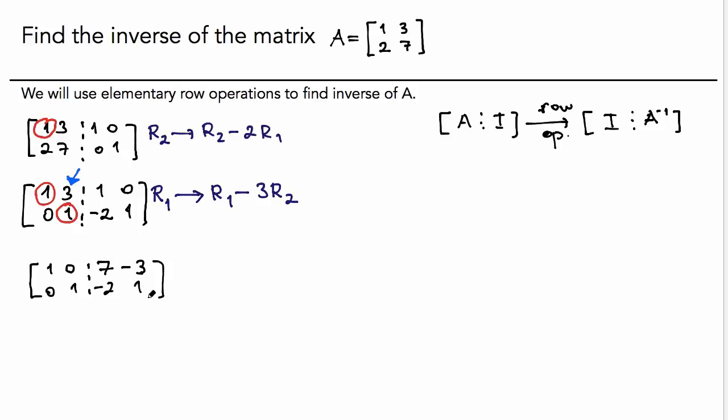And the last row stays the same. It looks like we're good. On the left, I have the identity matrix. And on the right, I have A inverse. Really? Is that true? Let's write it. A inverse is seven, negative three, negative two, and one.